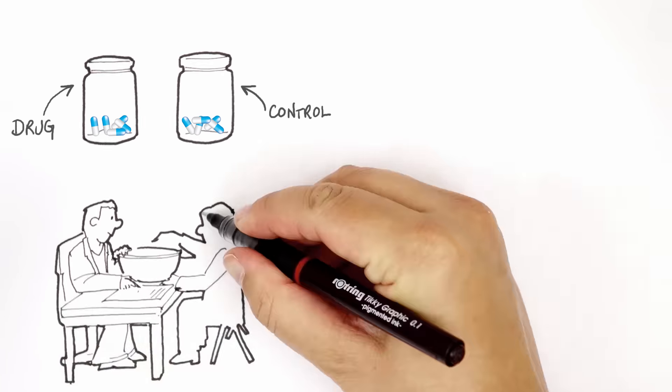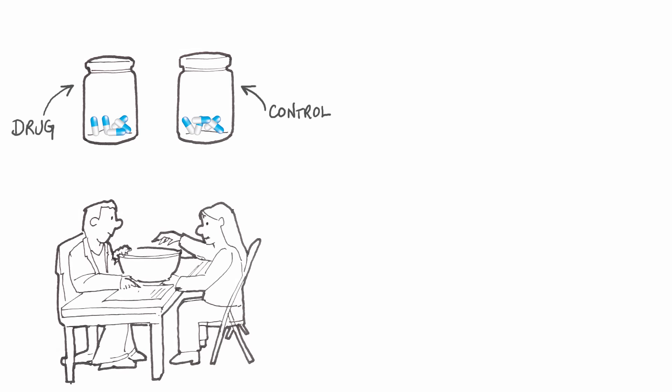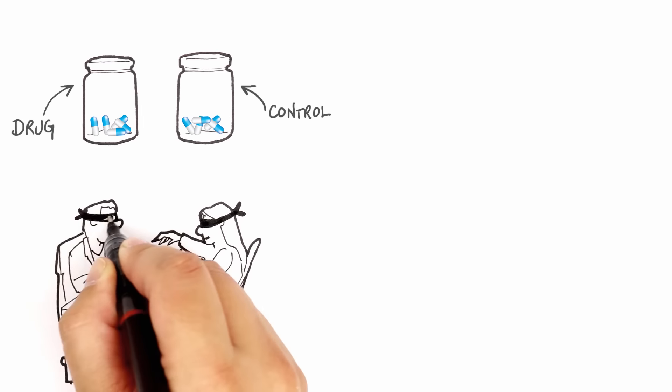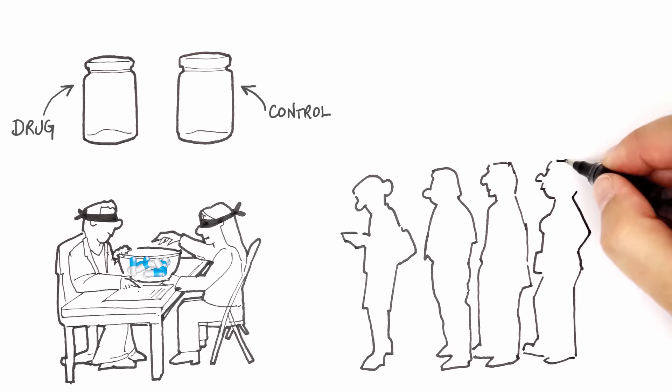Most comparative studies are performed under double-blind conditions. Neither the patients nor the doctors know who's getting which drug or the placebo. So the two treatments must look exactly alike and the patients entering the study are randomized.